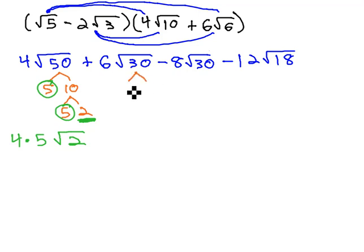For the 30's, 30 is 3 times 10, and 10 is 2 times 5. You'll notice there's no pairs this time that can come out of the radical. As there are no pairs, we can't simplify this radical at all, and so we'll just leave it as 6 root 30.